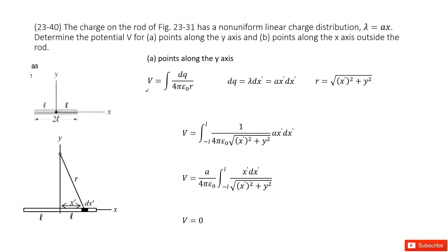This is a follow-up problem for problem 38. We can see we have a rod. The length is 2L. The charge distributed on it follows this function with x. Now we need to find the potential at points along the y-axis and points along the x-axis.